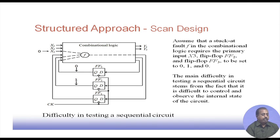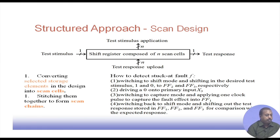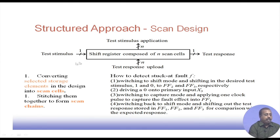This is actually the difficulty in testing sequential circuits — getting the flip-flops into some desired values, specifically getting FF3 to 0 and FF2 to 1. In scan design, all these flip-flops are converted into a shift register. If there are n flip-flops in the circuit, this shift register will consist of n scan cells. A test stimulus pin is added to the system; through this pin, the shift register will be loaded serially — in n clock cycles, the shift register will be loaded serially.